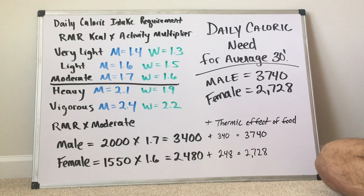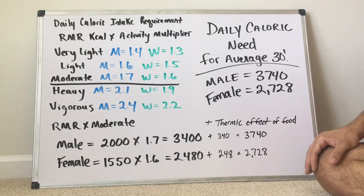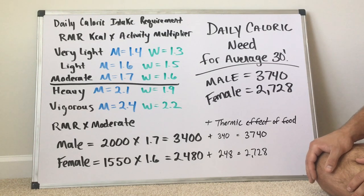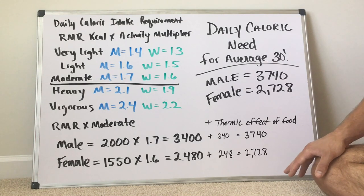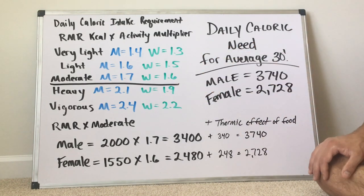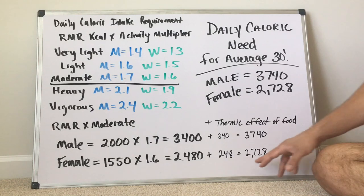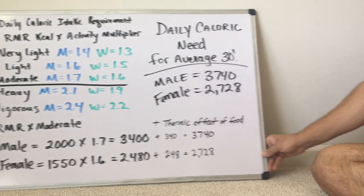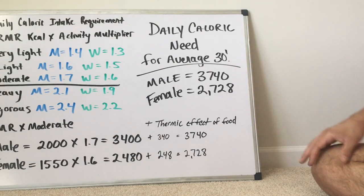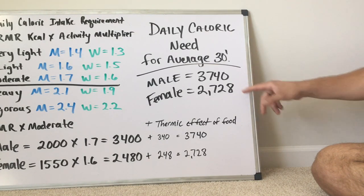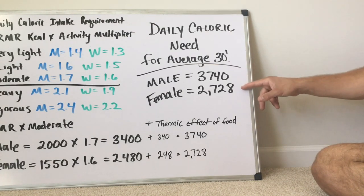Based on those 3,400 calories, you're going to have 3,740 calories per day to maintain your weight — that's if you're at around 200 pounds and about five foot nine. Yours can be below or higher than this, so you have to take your own calculations from the beginning. For females, we have 1,550 times 1.6 for moderate activity, which gives 2,480, and we add 248 — or 10% — for the thermic effect of food, getting 2,728. So the daily caloric need for the average 30-year-old: males 3,740, females 2,728, based on 5'9" and 5'4", at 200 and 170 pounds.